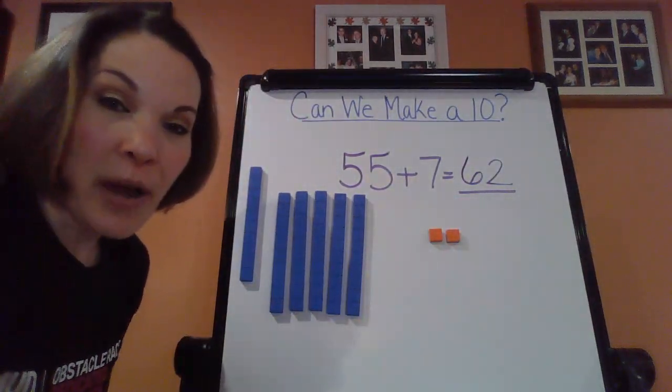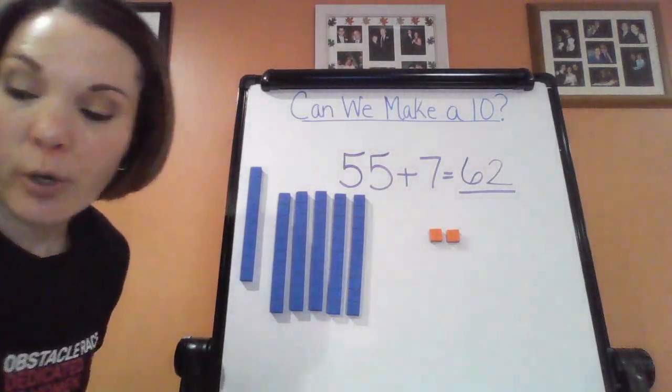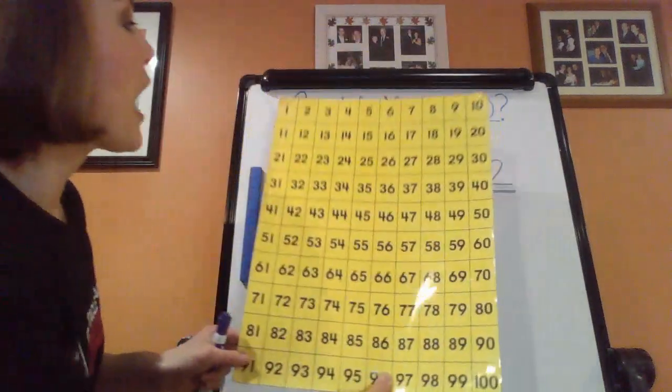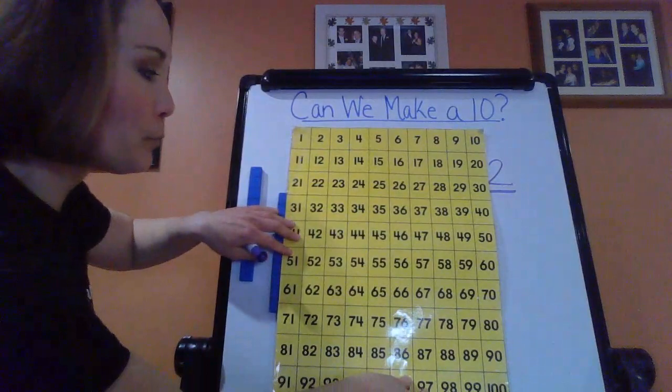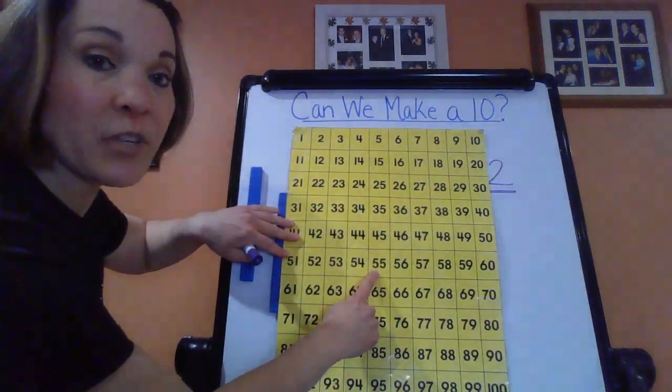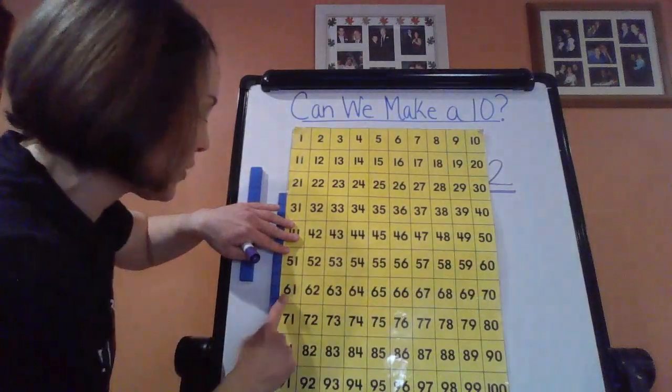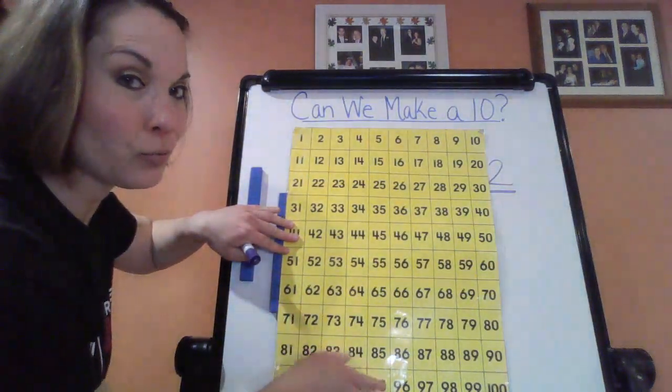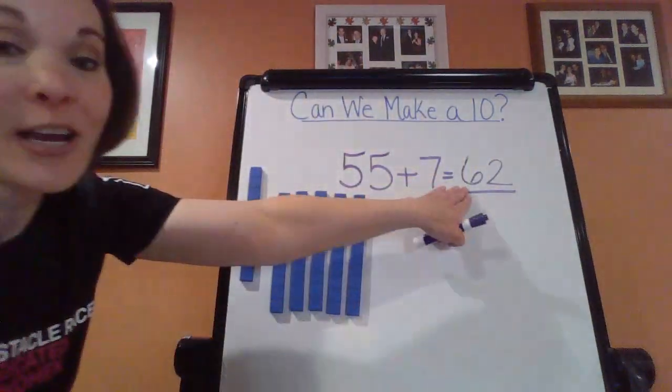So maybe for some of my non-believers or my friends that like to check their work, we are going to go right back into my hundreds chart. And I'm going to look for my 55. And I want to count on seven more. So let me find him. Oh, he's right here. 55, seven more. One, two, three, four, five, six, seven. We ended on 62. Just like the sum that we got up here, 62.